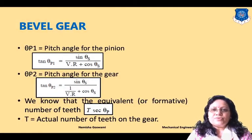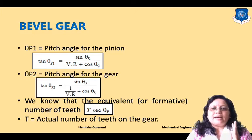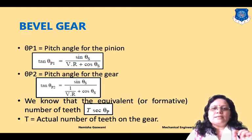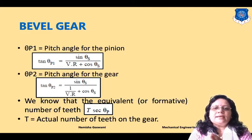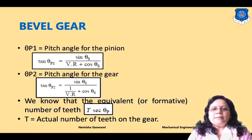The standard formula for pitch angle of the pinion is: tan θp1 = sin θs / (velocity ratio + cos θs). Similarly, pitch angle for the gear is given by: tan θp2 = sin θs / (1/VR + cos θs).